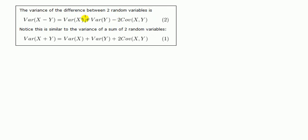So on the right-hand side, what is the difference? Hopefully you can see straight away that the difference is only in the covariance. For the variance of the difference, where there's a minus, there is a minus on the covariance. For the variance of the sum, a plus, there's a plus on the covariance. Otherwise the right-hand side is the same.